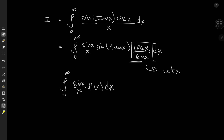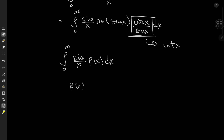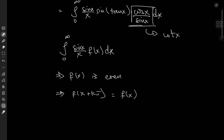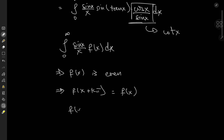where f satisfies two criteria: f of x is even, and f of x is pi-periodic, so that means f of x plus or minus k times pi equals f of x, where k is any integer. Now let's see if both criteria are satisfied for the case of our function, that is f of x equals sine of tangent x times the cotangent of x.